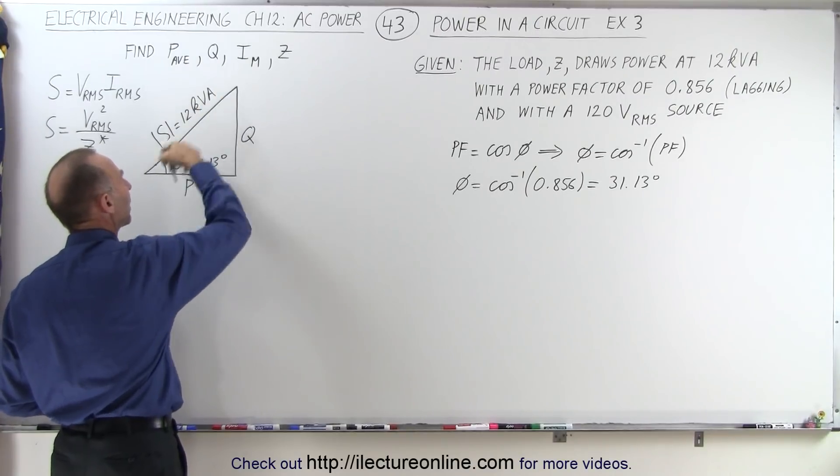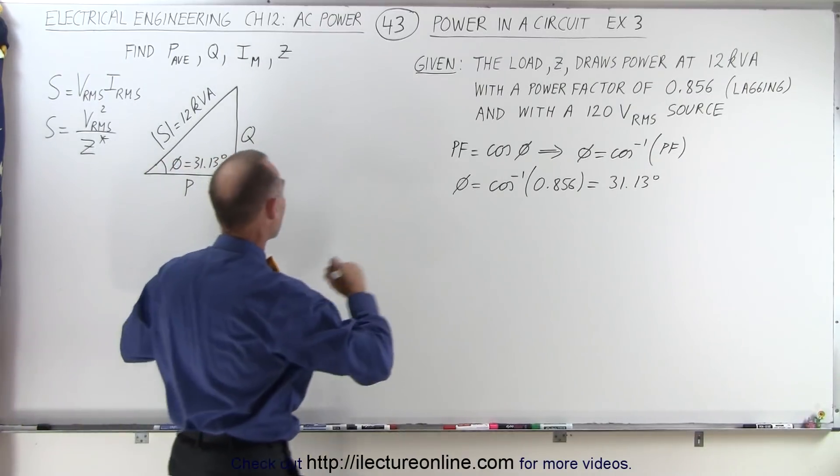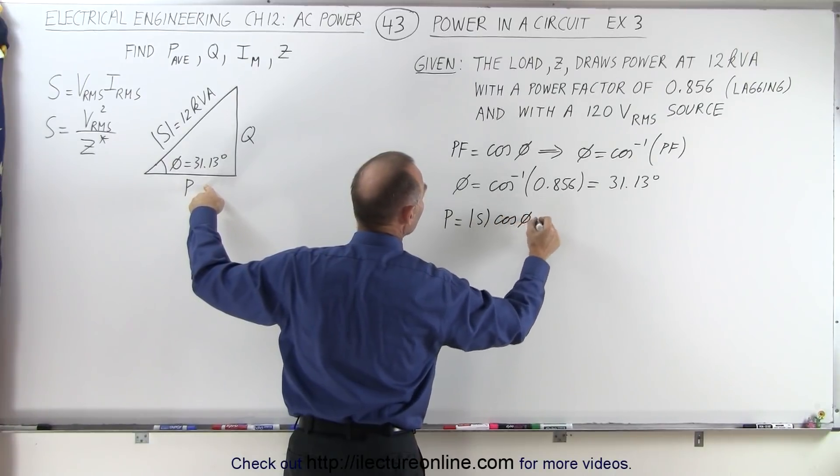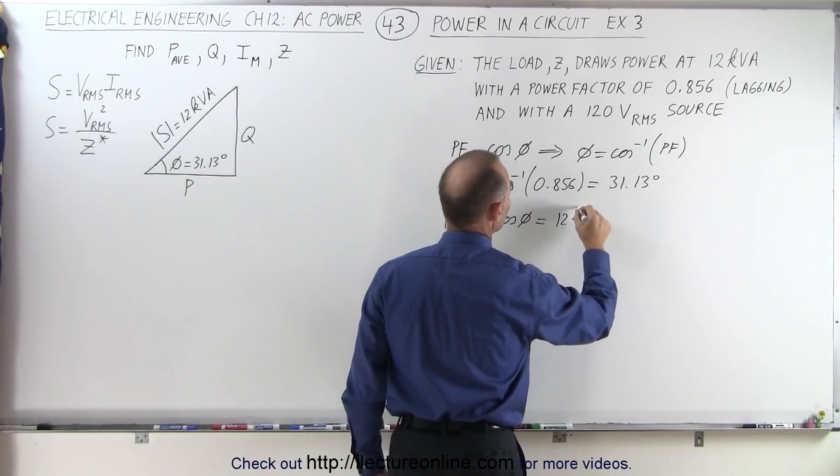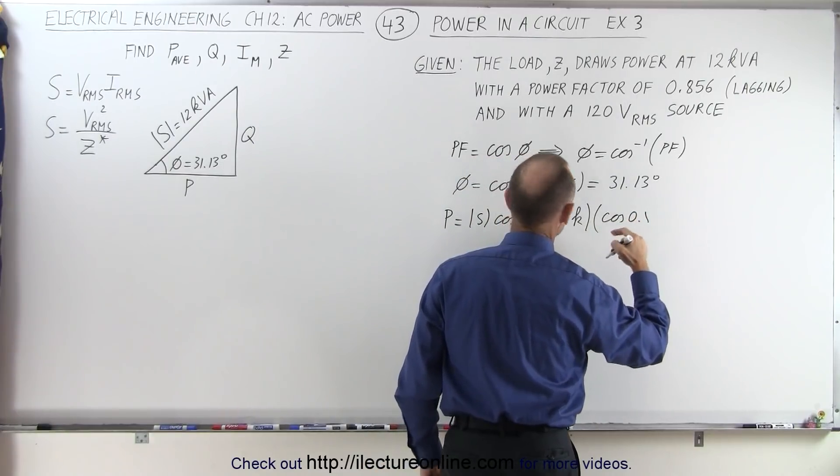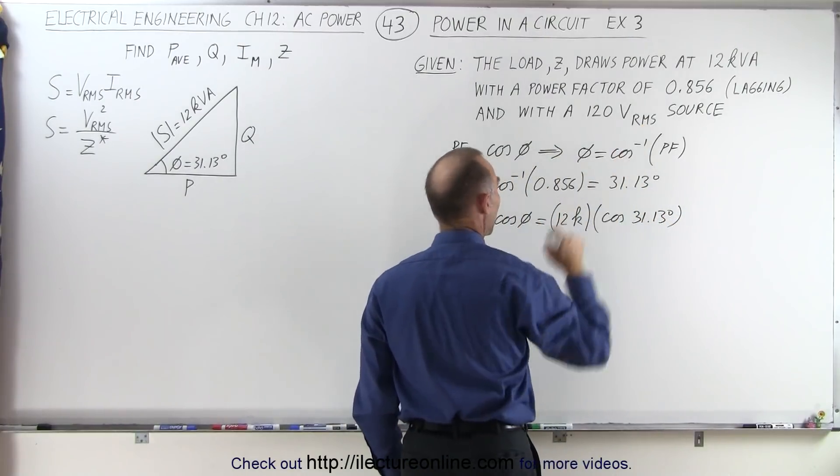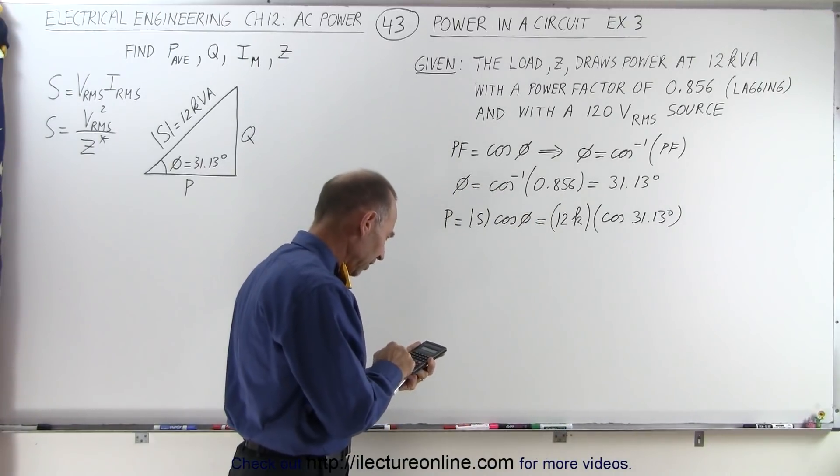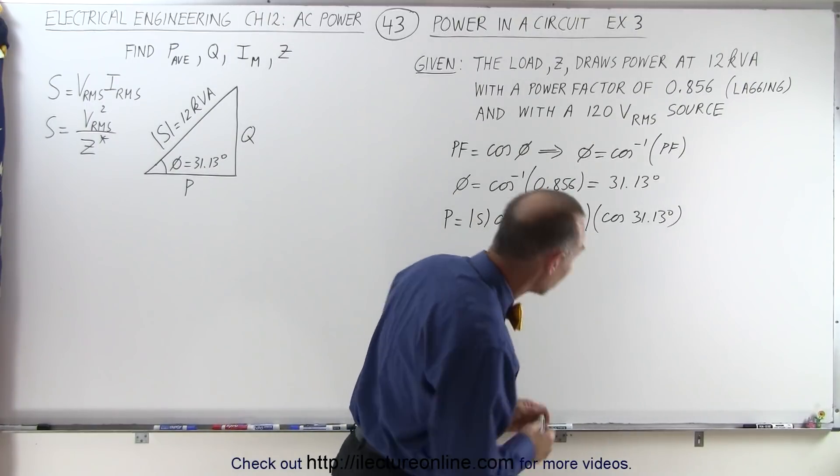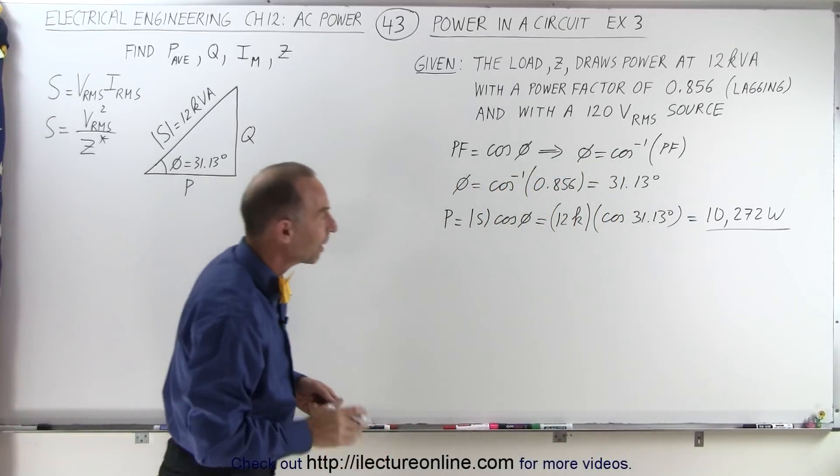Once we know the phase angle and we know the hypotenuse, the magnitude of the complex power, we should be able to find the real power and the reactive power. We can say that P is equal to S times the cosine of phi. So in this case, that would be 12 kilovolts multiplied times the cosine of 31.13 degrees. So therefore, we take 12,000 multiplied times 0.856. That gives us 10,272 watts, which is the real power dissipated by the circuit.